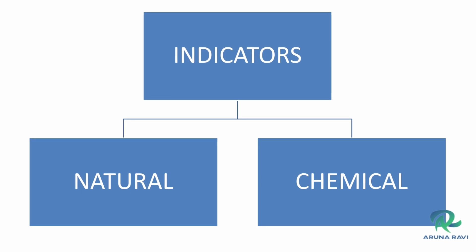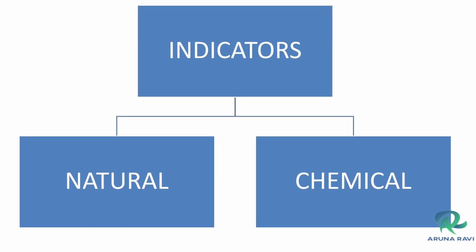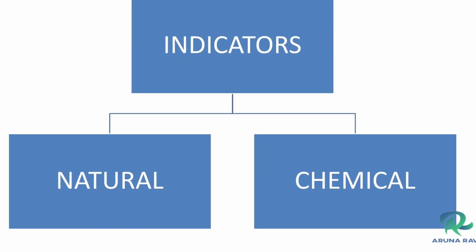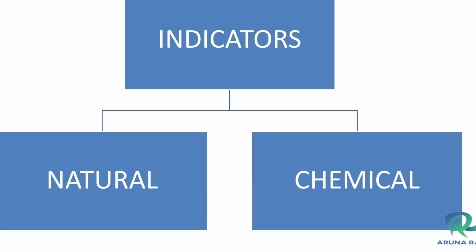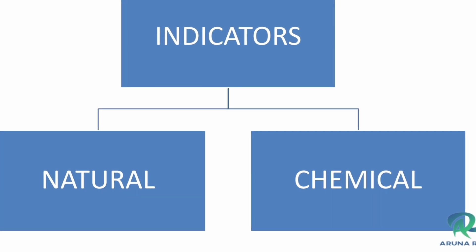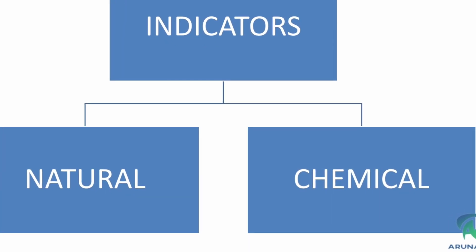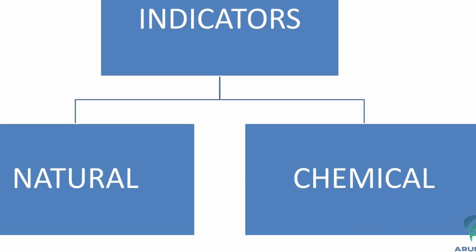What is an indicator? The substance which is used to identify whether the given substance is an acid, base, or neutral. There are two types: natural indicators and chemical indicators.